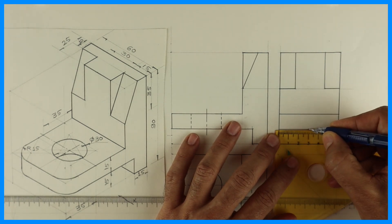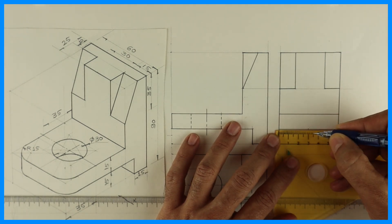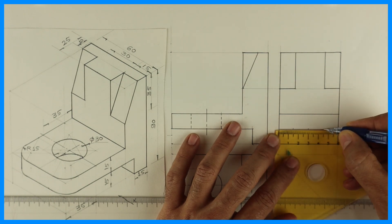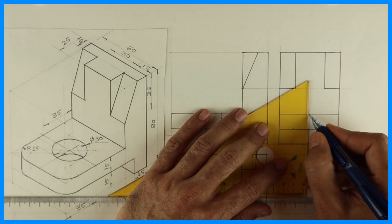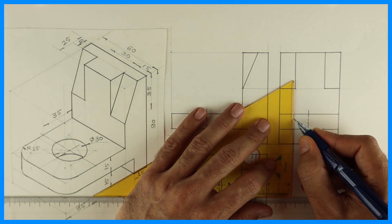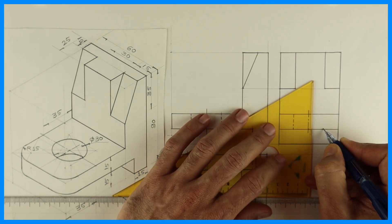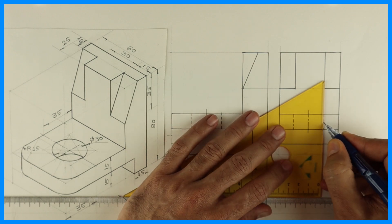Now we have to draw those dotted line T and B, extreme top and extreme bottom points. From top view we can project or we can draw axis line and we can take 15, 15 on both the sides. So these are the two dotted lines for the circle.